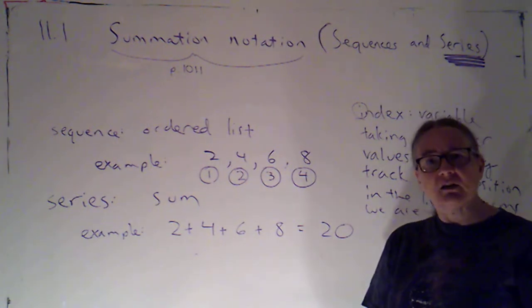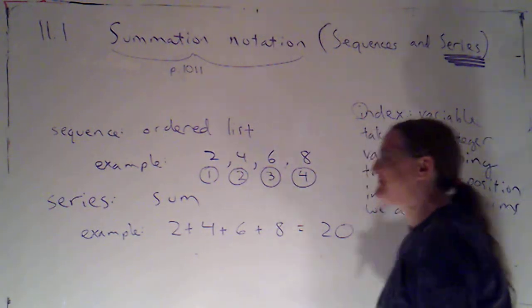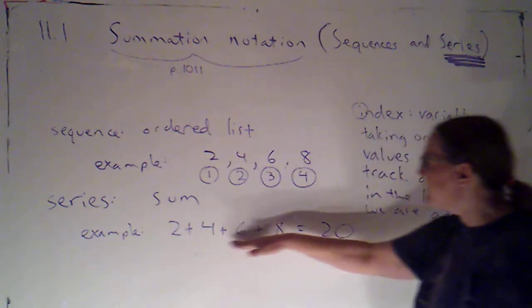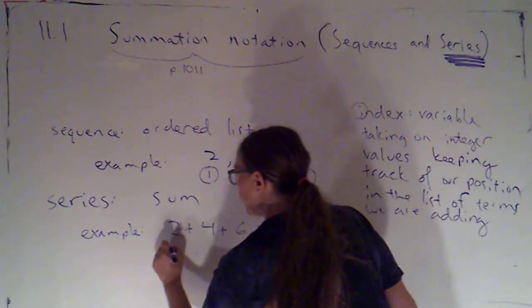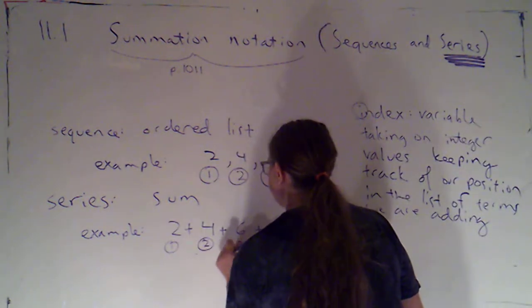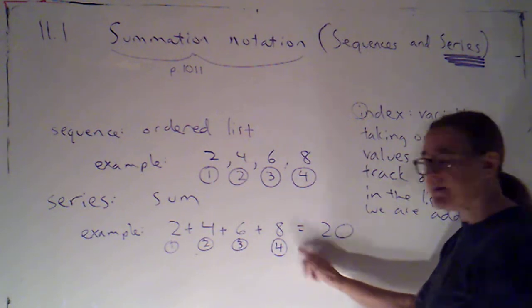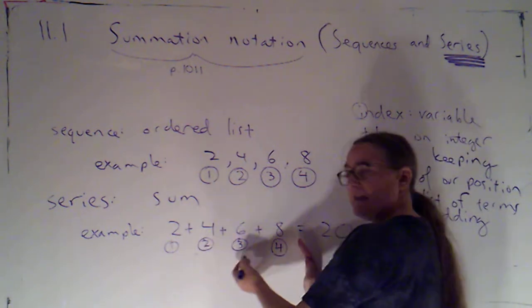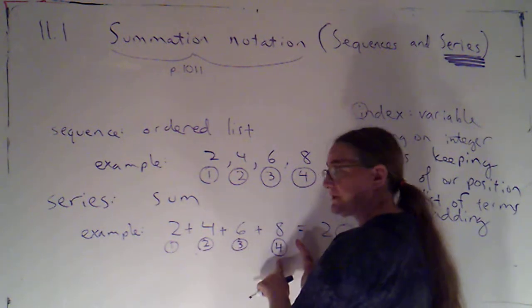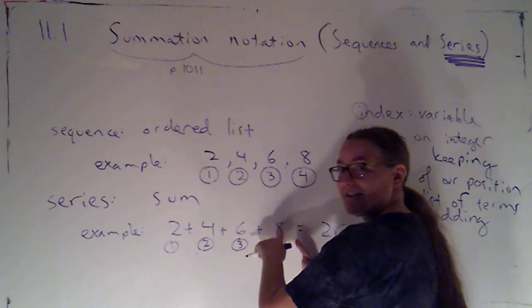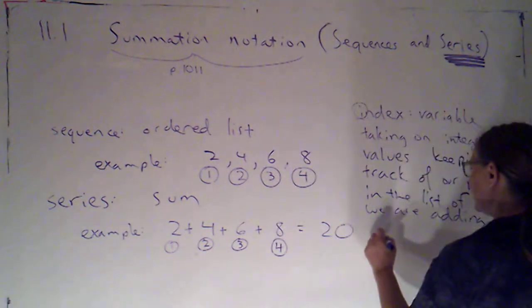The name of the letter doesn't matter. The important thing is that it's a variable that takes on integer values so that it's keeping track of where we are. The index can't be a fraction because it's not possible for me to be at the second and a half term in my list.